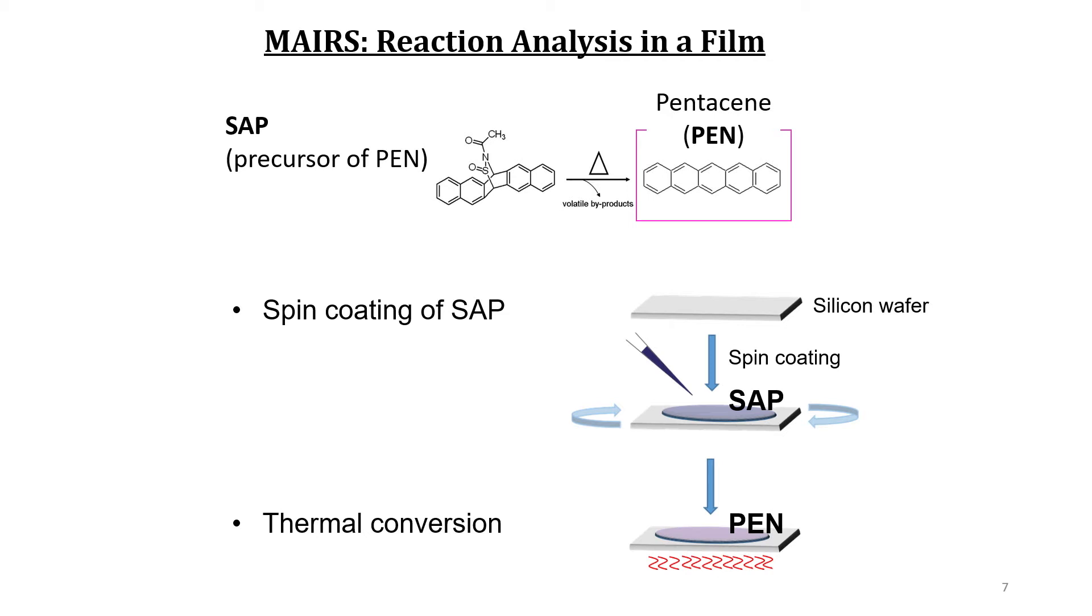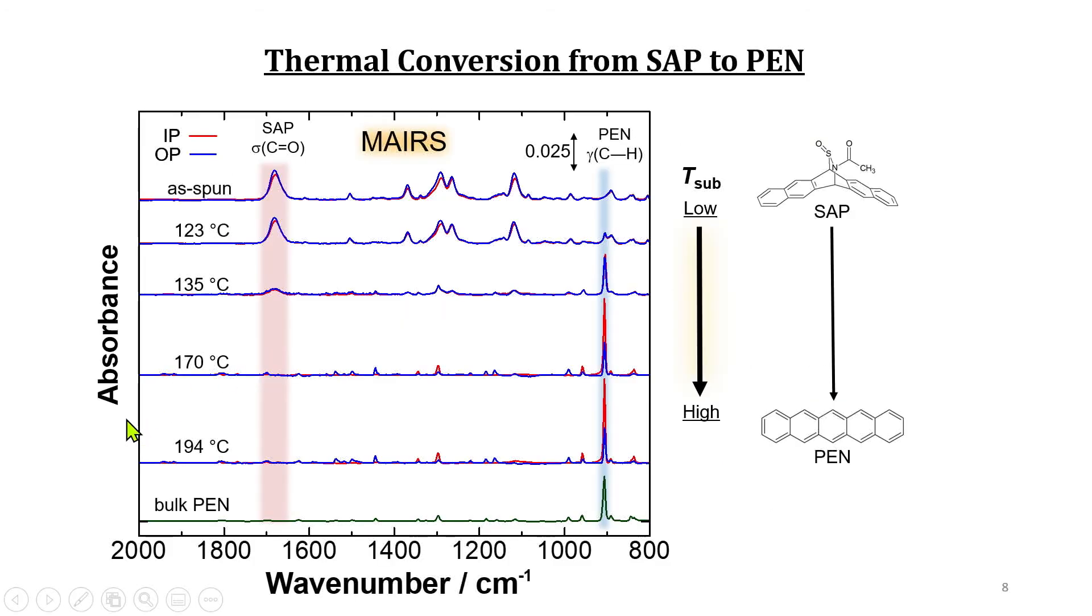The conversion mechanism in this film is investigated by using MAIRS. These are IR MAIRS spectra as a function of the thermal treatment temperature. The carbonyl group is available only in SAP, and therefore this band is a good marker of SAP. In a similar manner, this band is a good marker of pentacene. When we look over the spectra, the SAP band disappears at about 135 degrees, and at the same time, the pentacene band appears, which means the thermal conversion occurs at this temperature.